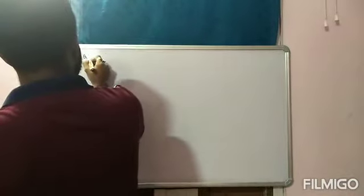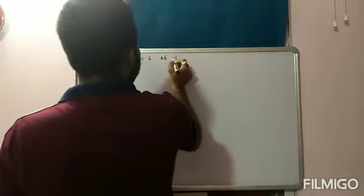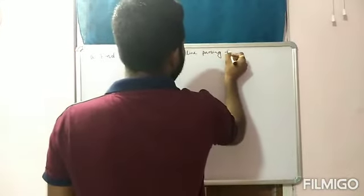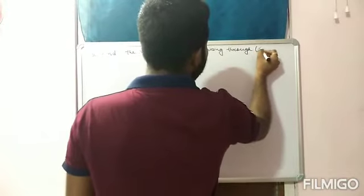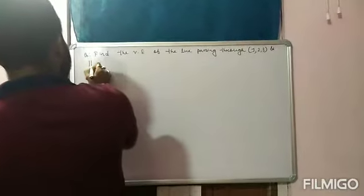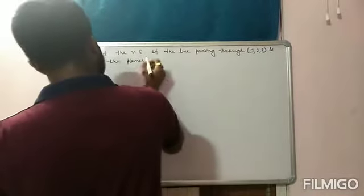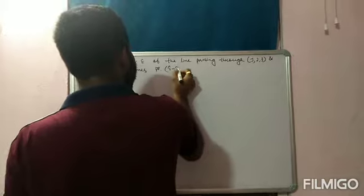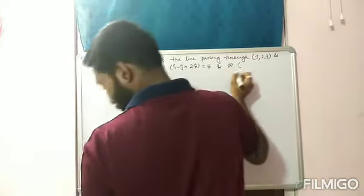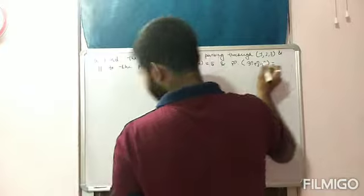Next question: find the vector equation of the line passing through the point (1, 2, 3) and parallel to the planes R̄ · (î − ĵ + 2k̂) = 5 and R̄ · (3î + ĵ + k̂) = 6.